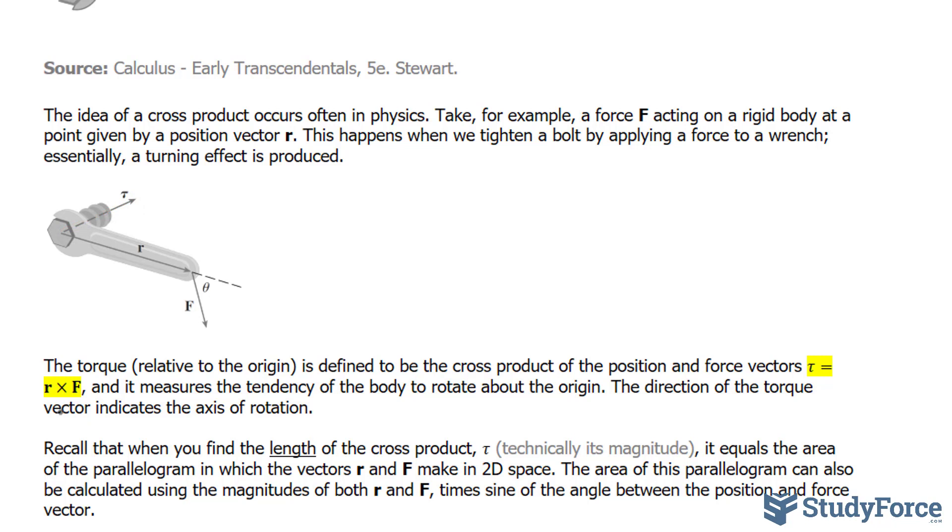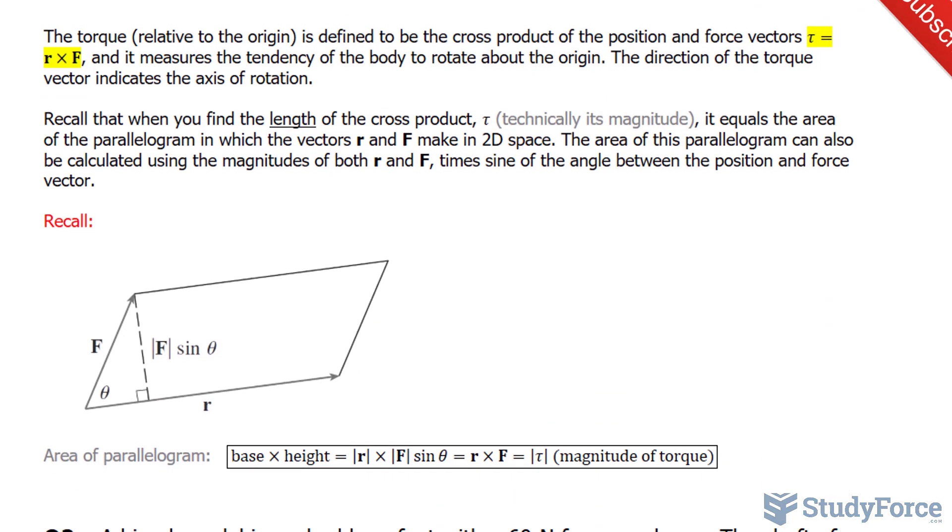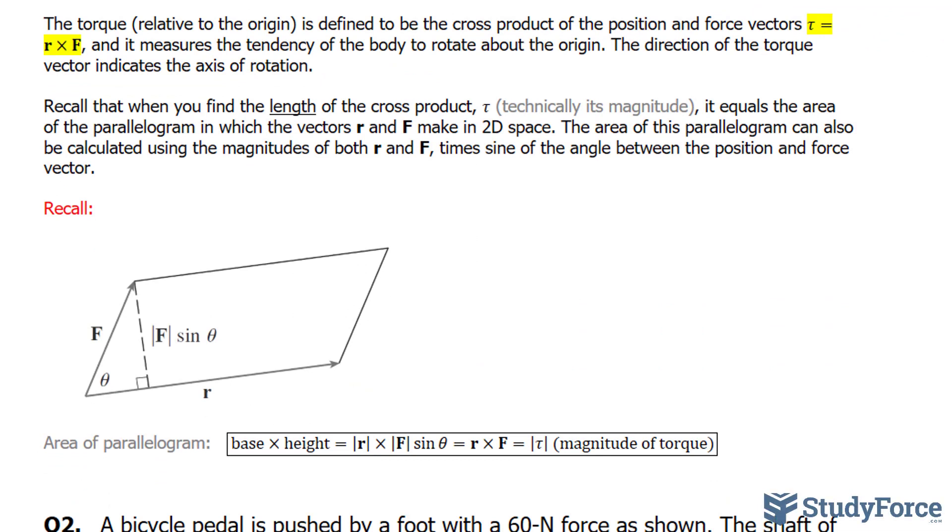Now in one of our previous videos, we learned that when you find the length or the magnitude of the cross product vector, you end up getting the area of the parallelogram in which the two vectors that make up the cross product make in 2D space. The area of this parallelogram can also be calculated using the magnitude of both R and F multiplied by sine of the angle between the position and the force vector. And just to give you an idea of that, take a look at this illustration.